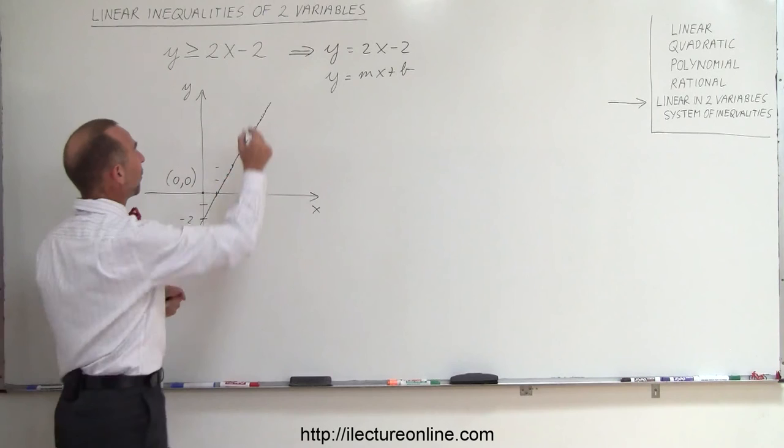Which means that the point I chose, my trial point right here, is in the region that satisfies the inequality, which means all the other points on that side satisfy the inequality. The points on the other side do not. What I like to do is mark this as the side that does not satisfy the inequality, and therefore all the points to the left of that line satisfy this inequality.